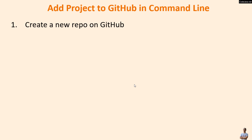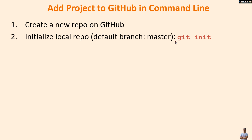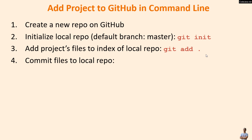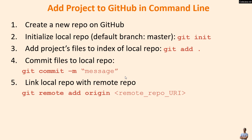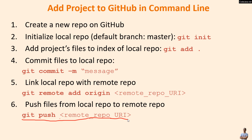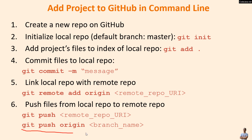Let me summarize the steps for adding a project to GitHub in the command line. First, create a new repo on GitHub.com. Then type 'git init' to initialize a new local repo with the default branch name master. Add project files to the index using 'git add .', then commit with 'git commit -m' followed by your commit message. Link the local repo with the remote using 'git remote add origin' followed by the remote repo URL. If already authenticated, push with 'git push origin' followed by the branch name.